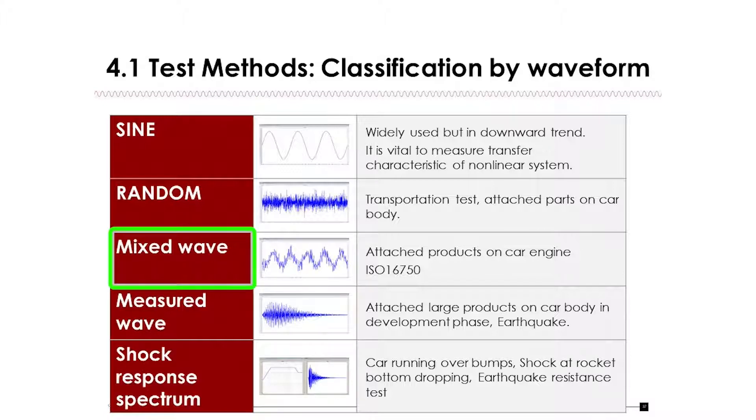One is a mixed wave. This is a vibration in which a sine wave and a random wave are mixed, SOR, and a vibration in which a random wave is mixed with a random wave, ROR. This is referred to as a mixed wave in the Japanese industrial standard.